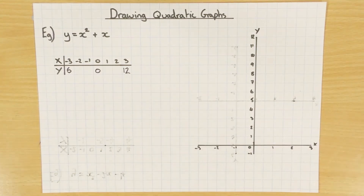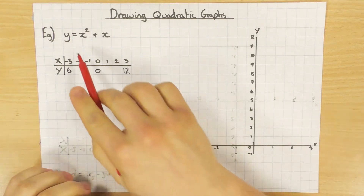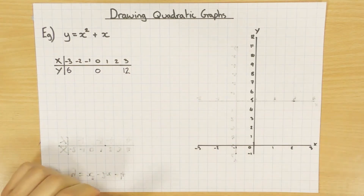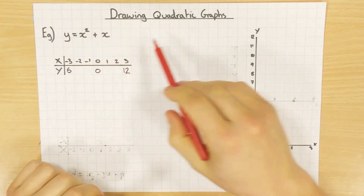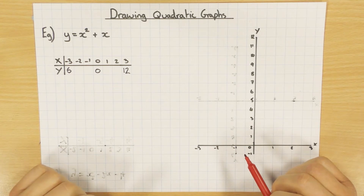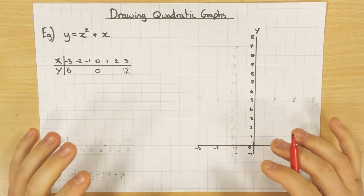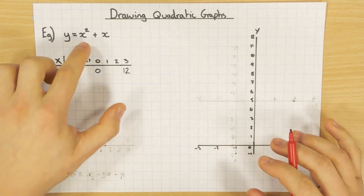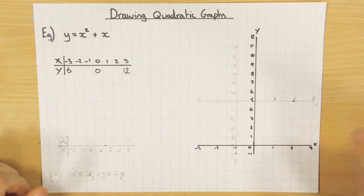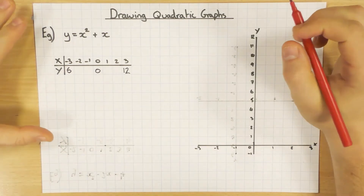Hi guys, in this video we're going to have a look at how we plot or draw quadratic graphs. The first thing to have a look at is the actual equation I'm going to plot here. And because it's x squared, that's sort of a clue that it's a quadratic. It's a little bit trickier than plotting a straight line, because I can't use the flowchart — I'm going to have to substitute it in. When you're dealing with negatives and squares, it does get tricky, so make sure you do what I'm about to show you.